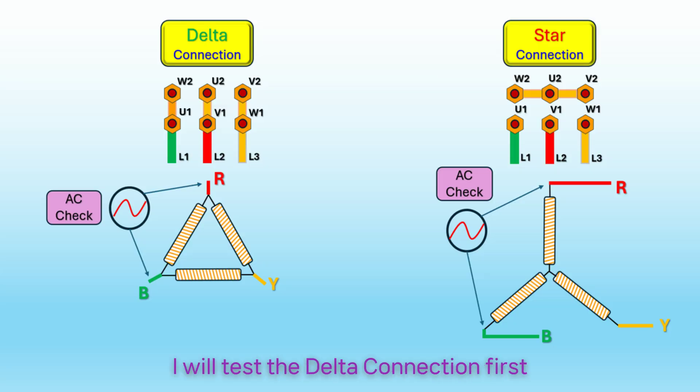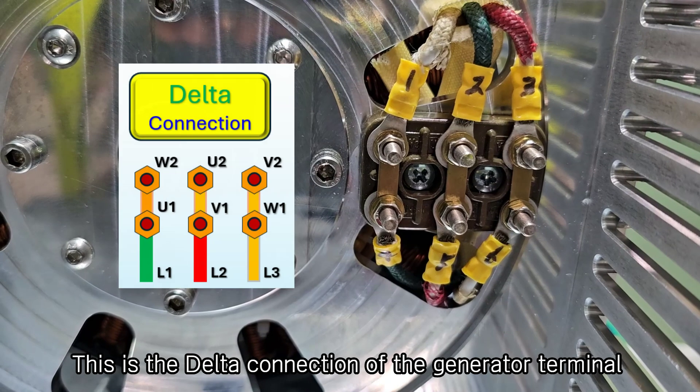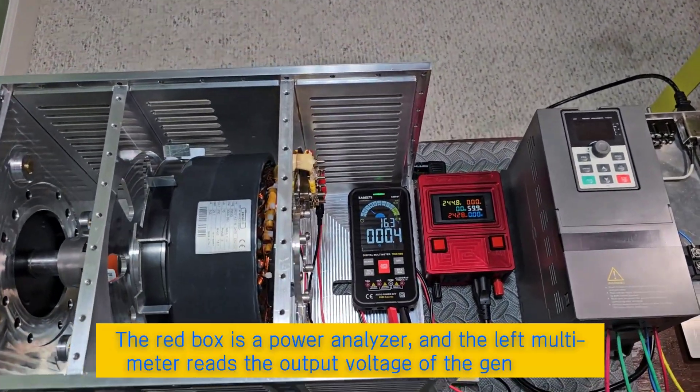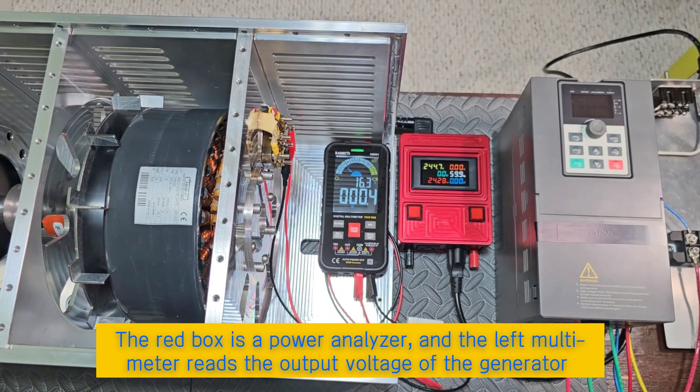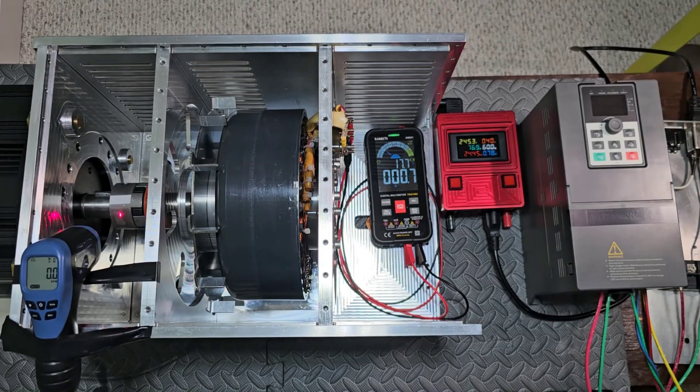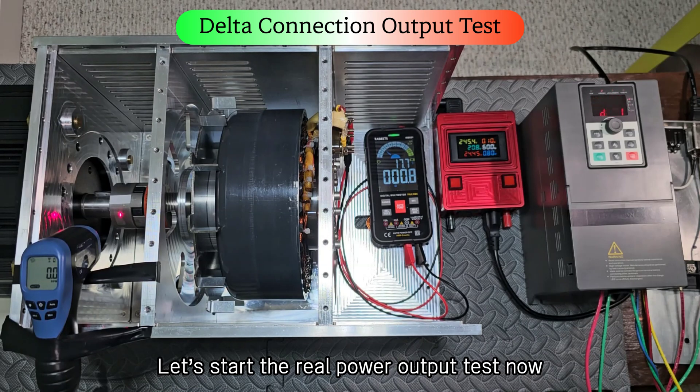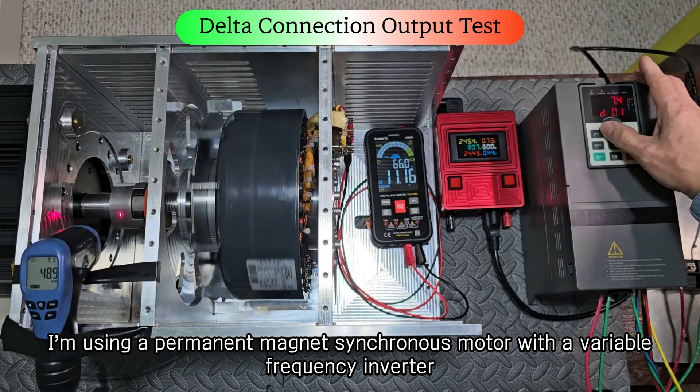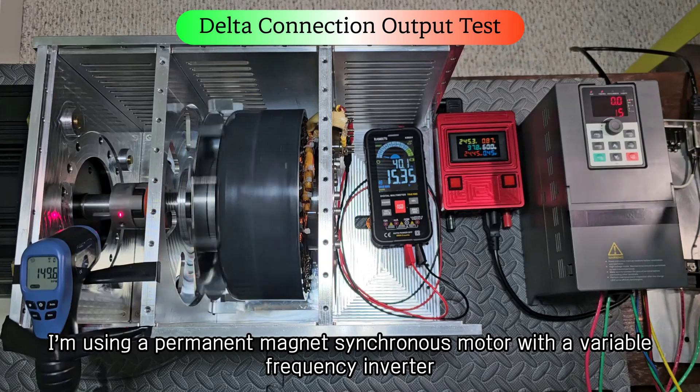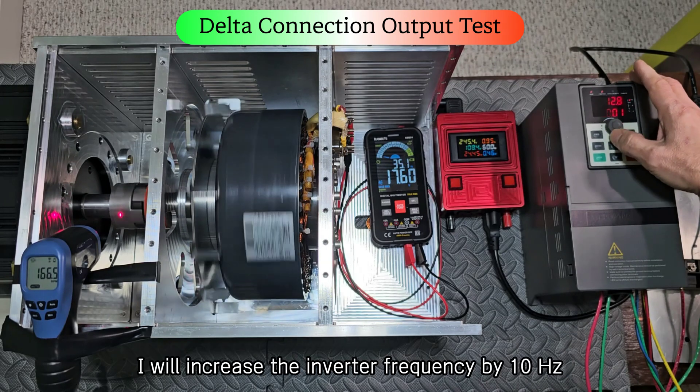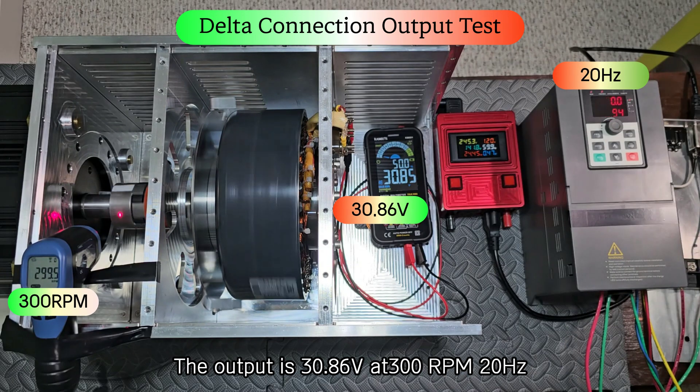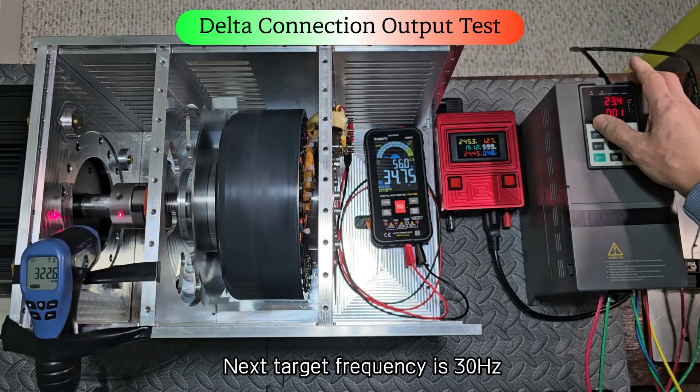I will test the delta connection first. This is the delta connection of the generator terminal. The red box is a power analyzer, and the left multimeter reads the output voltage of the generator. Let's start the real power output test now. I'm using a permanent magnet synchronous motor with a variable frequency inverter. I will increase the inverter frequency by 10 hertz.